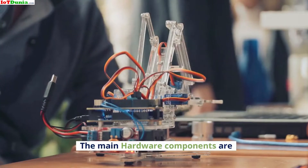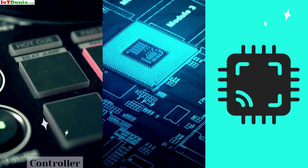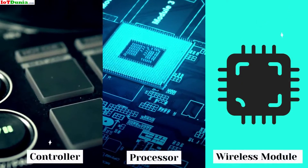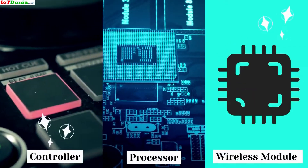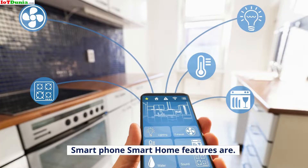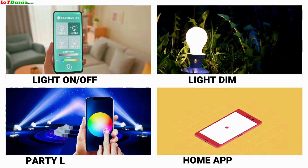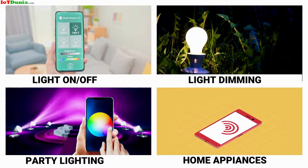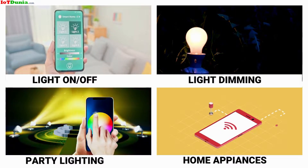The main hardware components are controller, processor, and wireless module. Smartphone smart home features include lighting on and off, light dimming, party lighting, and home appliances.